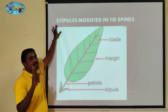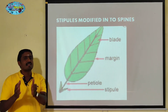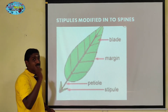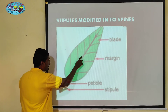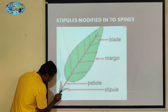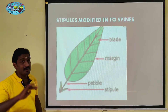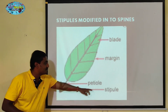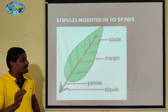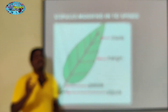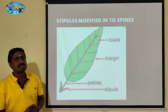Stipules are modified into spines — that is the second character. Leaves are modified into spines — that is another character. Stipules are leaf-like scale structures on the plant. They will be modified into spines.